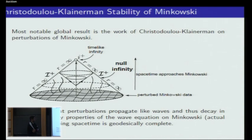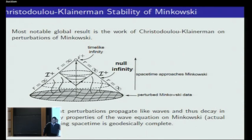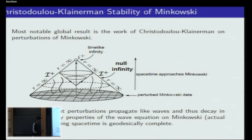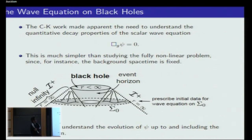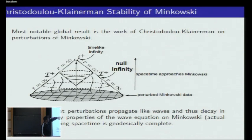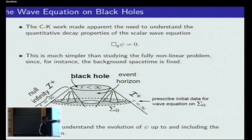You have to understand exactly what kind of fall-off conditions you need at infinity — these conditions are non-trivial and you have to be very specific because you have the notion of the ADM mass, which depends exactly on the way your data decay. From that work, it was apparent that one of the first things you need to understand is the decay properties of the wave equation.